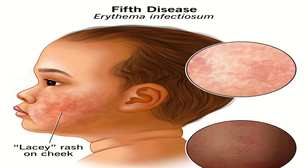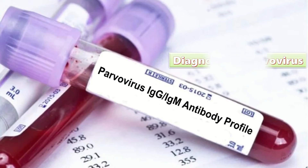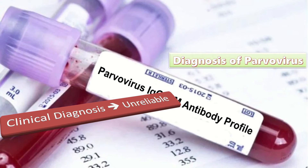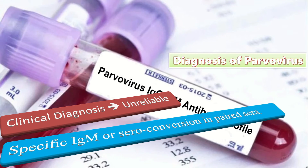Fifth disease is also called erythema infectiosum, in which there is rash secondary to immune complex deposition. Clinical diagnosis is usually unreliable; for diagnosis there must be specific IgM or seroconversion in paired sera.